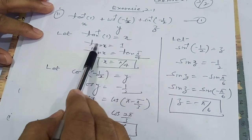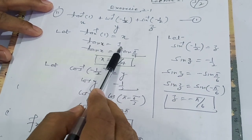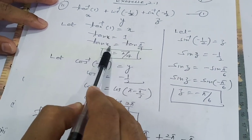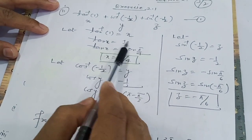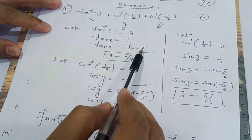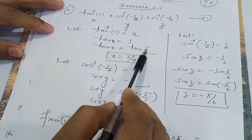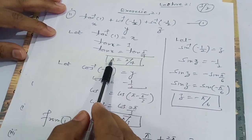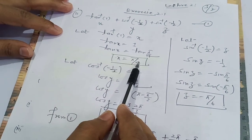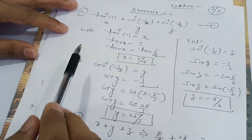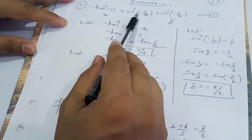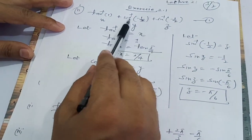So tan x = 1, and since tan(π/4) = 1, we get tan x = tan(π/4), therefore x = π/4.